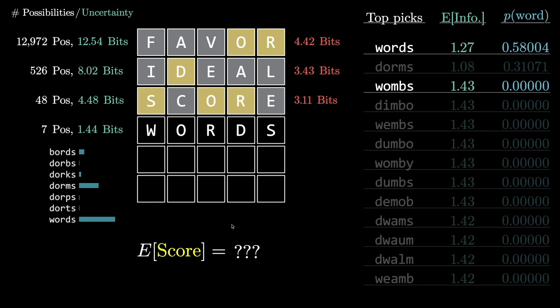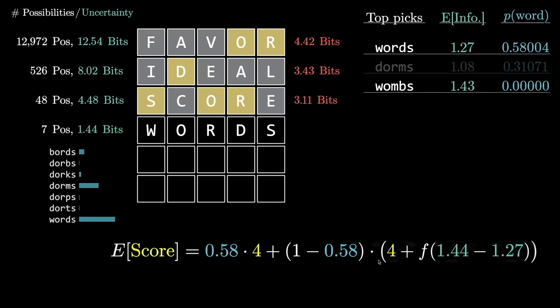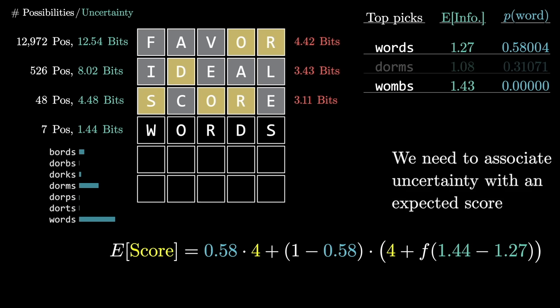If we're considering the prospect of a next guess, like in this case words, what we really care about is the expected score of our game if we do that. And to calculate that expected score, we say, what's the probability that words is the actual answer, which at the moment it describes 58% to. We say with a 58% chance, our score in this game would be four. And then with the probability of one minus that 58%, our score will be more than that four. How much more we don't know, but we can estimate it based on how much uncertainty there's likely to be once we get to that point. Specifically, at the moment, there's 1.44 bits of uncertainty. If we guess words, it's telling us the expected information we'll get is 1.27 bits. So if we guess words, this difference represents how much uncertainty we're likely to be left with after that happens.